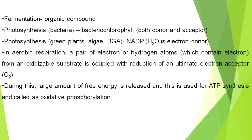Next, fermentation — it involves organic compounds. Next, photosynthesis. In photosynthetic bacteria, the pigment involved is bacteriochlorophyll, which involves both donor and acceptor. In green plants, algae, and blue-green algae (BGA), photosynthesis involves NADP, where water is the electron donor. NADP means nicotinamide adenine dinucleotide phosphate.